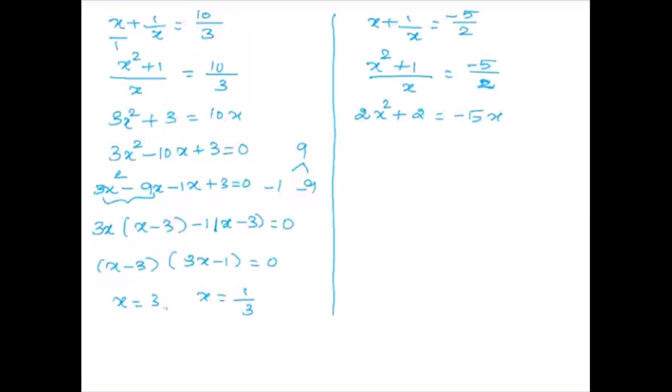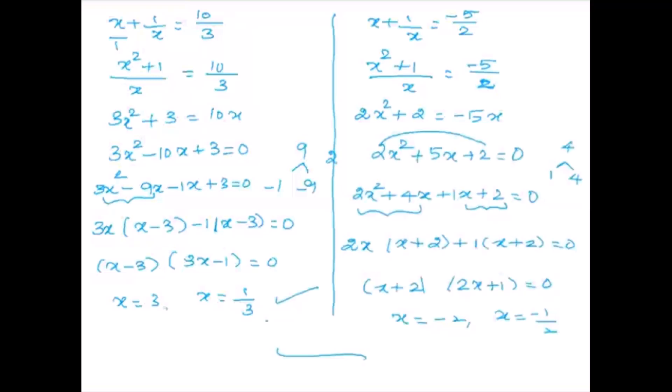Therefore the four solutions are x = 3, x = 1/3, x = minus 2, and x = minus 1/2. These are the required solutions of the given polynomial equation. It is already known that 1/3 is a solution, so we find the remaining four. This is a very important five-mark question — note it down.